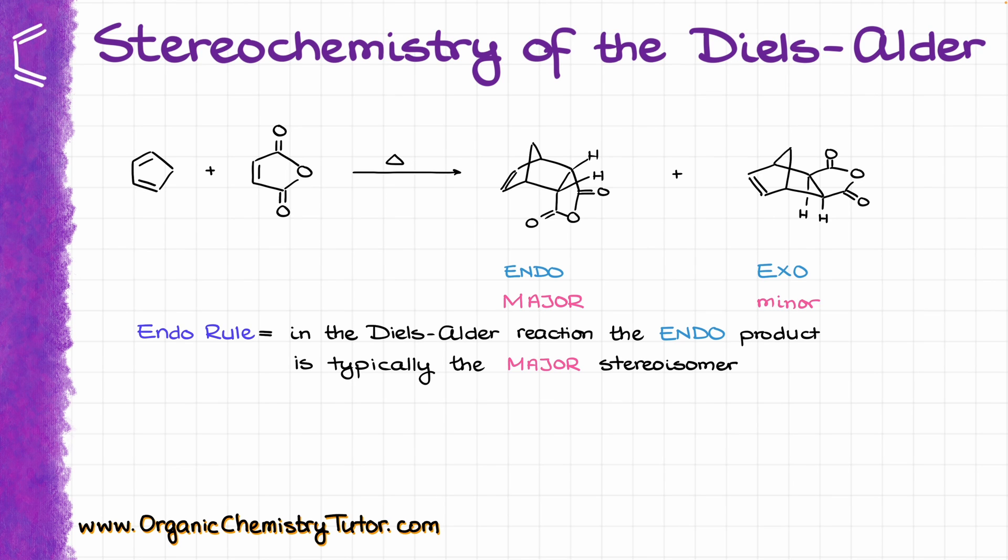You might be wondering why, because the endo product looks like it is less thermodynamically stable. And indeed, in most cases the endo product is in fact going to be less stable. The trick here is in the transition state.